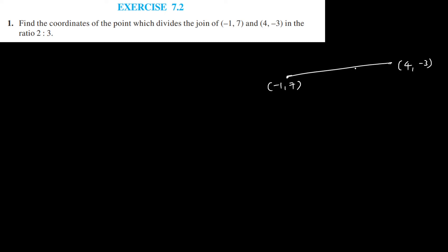We have two points which are forming a line and we have to find the coordinates of point P which is dividing this line in the ratio 2 is to 3.